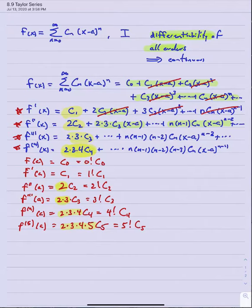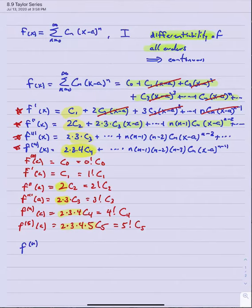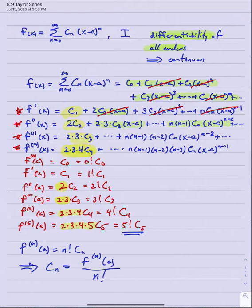Now I've got a clear pattern. Considering the original function as the zeroth derivative, when I take the nth derivative at a, I get n factorial times the coefficient of the nth degree term. Another way to look at this is that c sub n equals the nth derivative of the function at a divided by n factorial.